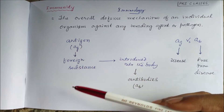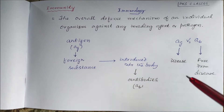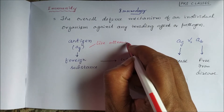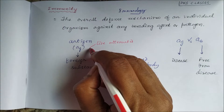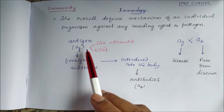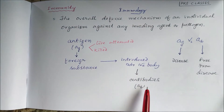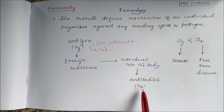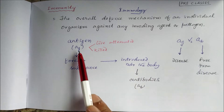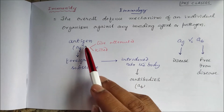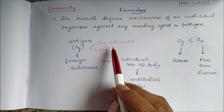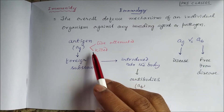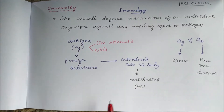Whereas if we give the antigen in the attenuated form or killed form — either as live attenuated, where we have decreased its power, or in the killed form — they can activate the immune system to produce antibodies, so that when the actual antigen comes next time, these antibodies will be prepared and can eliminate it. When we give the antigen in inactive or live attenuated form, they are called vaccines.